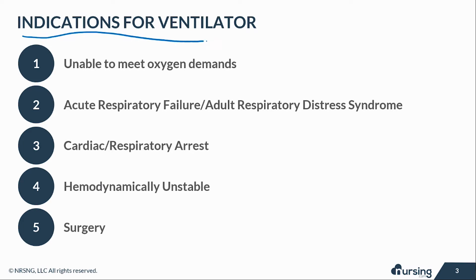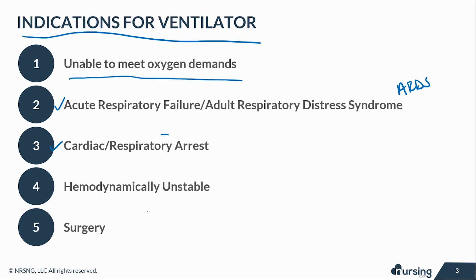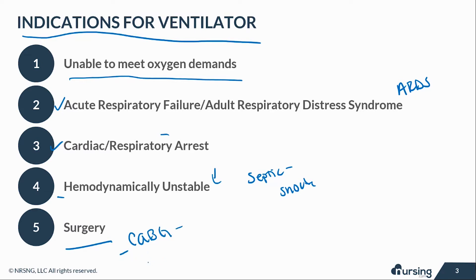First of all, indications for a ventilator. The most common reasons include: if a patient is unstable and decompensating and unable to meet oxygen demands; if they go into acute respiratory failure or adult respiratory distress syndrome, also known as ARDS; if they go into cardiac or respiratory arrest; if they are hemodynamically unstable and quickly decompensating, like somebody who is septic and going into shock; or if they're having major invasive surgery. A perfect example would be a patient undergoing bypass surgery.